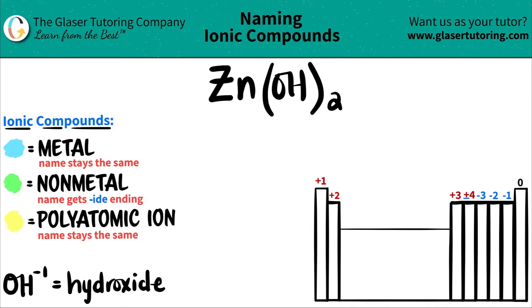In this case, I do have three different elements. I have Zn, which is zinc, O for oxygen, and H for hydrogen. So let's identify that polyatomic ion. Remember guys though, polyatomics are never going to be on the periodic table. You have to memorize them.